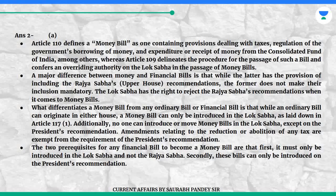Answer is A. Article 110 defines a money bill as one containing provisions dealing with taxes, regulation of the government's borrowing of money, and expenditure or receipt of money from the Consolidated Fund of India, among others. Article 109 delineates the procedure for the passage of such a bill and confers an overriding authority on the Lok Sabha in the passage of money bills. A major difference between money and financial bills is that while the latter has the provision of including the Rajya Sabha's (Upper House) recommendations, the former does not make their inclusion mandatory. The Lok Sabha has the right to reject the Rajya Sabha's recommendations when it comes to money bills.